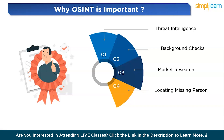Finally, OSINT is used for locating missing persons. Law enforcement, non-profits, and volunteers use OSINT to help find missing people by monitoring social media posts for sightings, searching public records and surveillance camera data, and using geolocation data from images or posts. Volunteers use social media OSINT to gather sightings by analyzing tagged locations and cross-referencing public posts. These varied use cases make OSINT a very important tool.